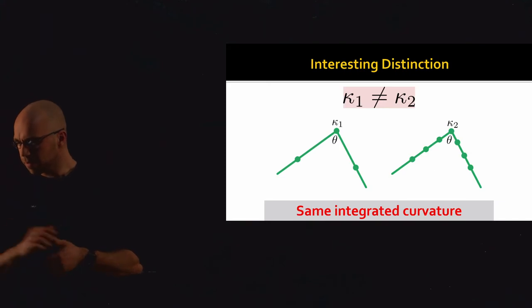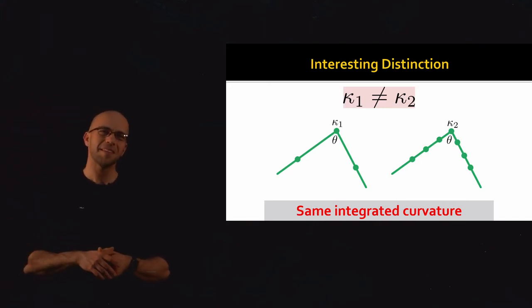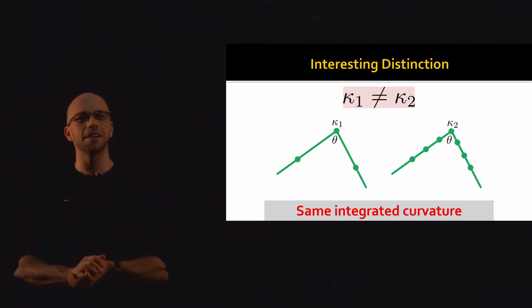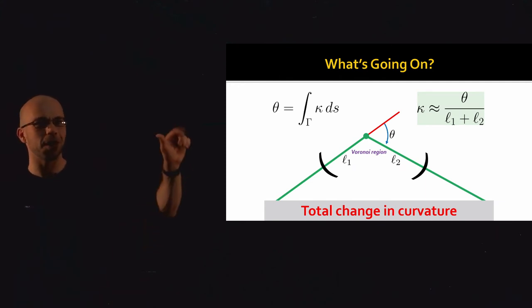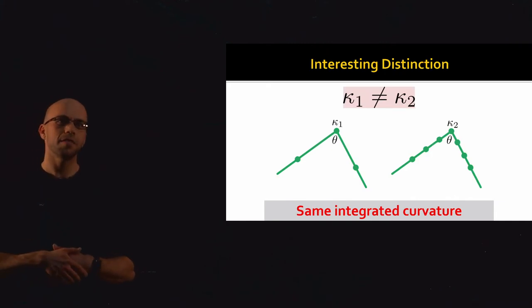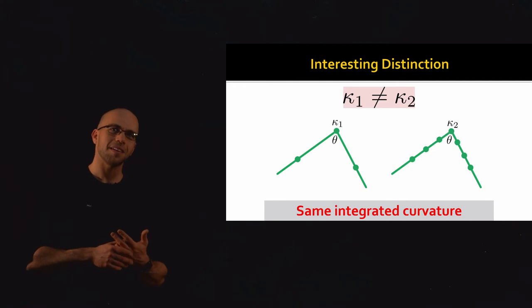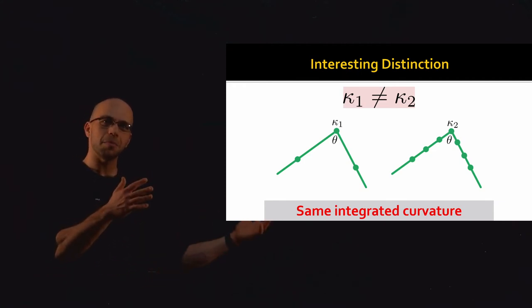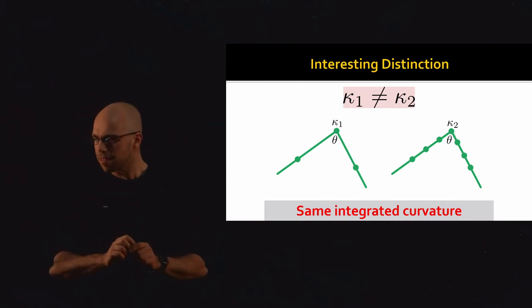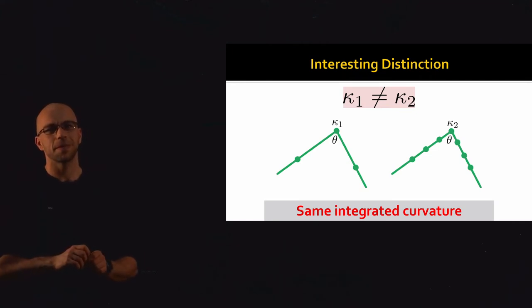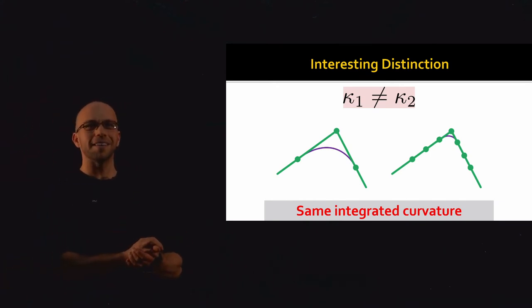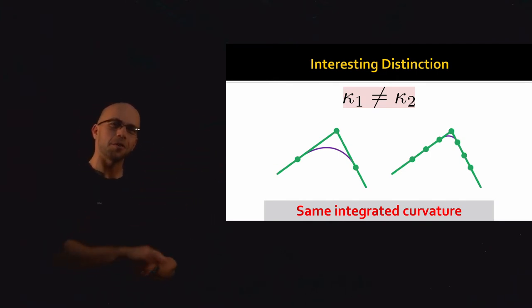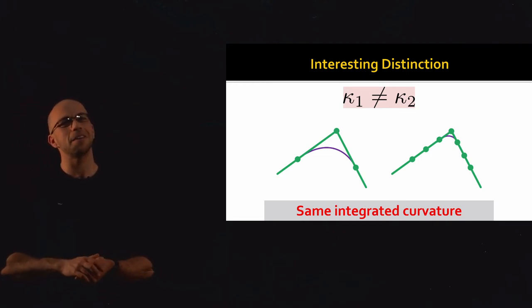There's an interesting geometric observation here. Consider two different polylines where I've taken the first one and subdivided it — they both meet at the same angle θ. But if we go back to our approximation κ, remember that κ is divided by the cell size (the sum of the two l's). So κ₁ is divided by a bigger number than κ₂, because κ₂ has a smaller dual cell. So κ₁ is much less than κ₂ even though they share the same angle. Intuitively this seems a little weird since the two curves are identical at the corner — but by adding more samples to the polyline, we've suggested that the curve actually has a much sharper crease.